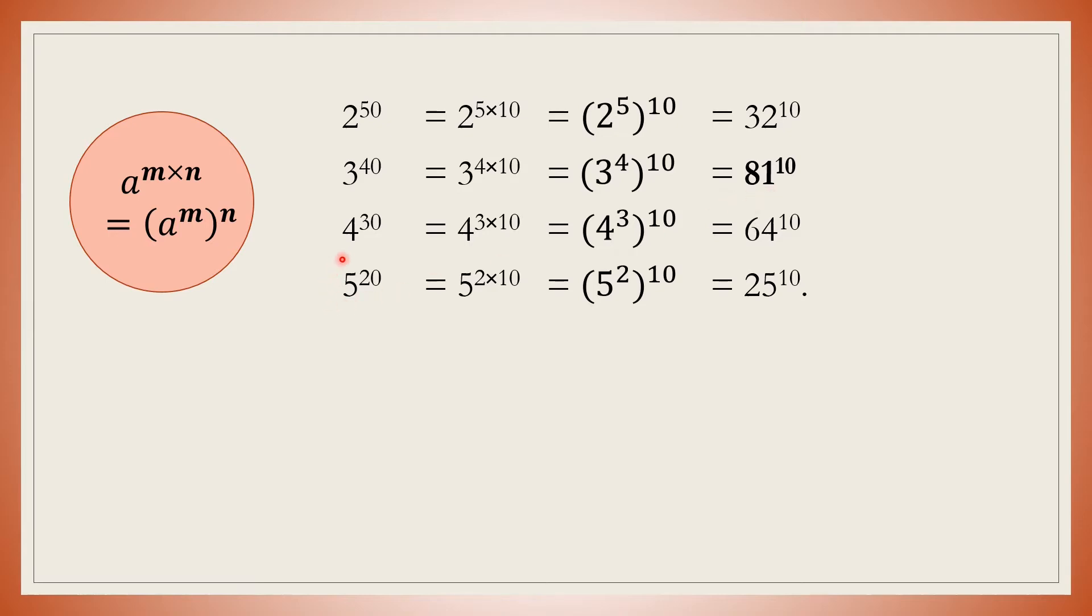Option C: 4 power 30 can be written as 4 power 3 into 10. This equals 4 power 3 the whole power 10, which equals 64 to the power 10.